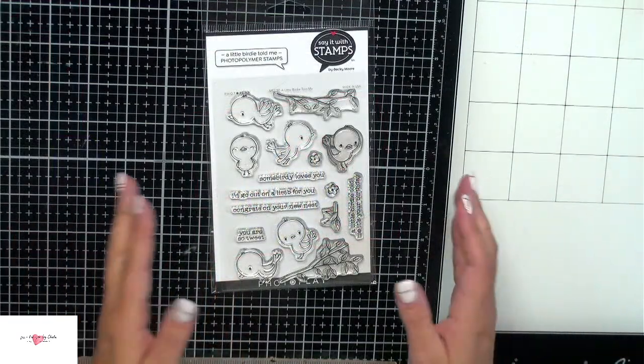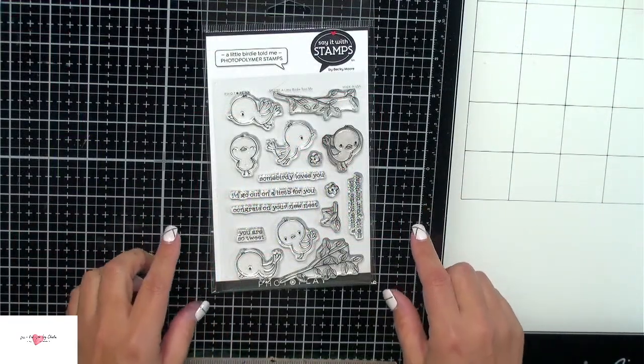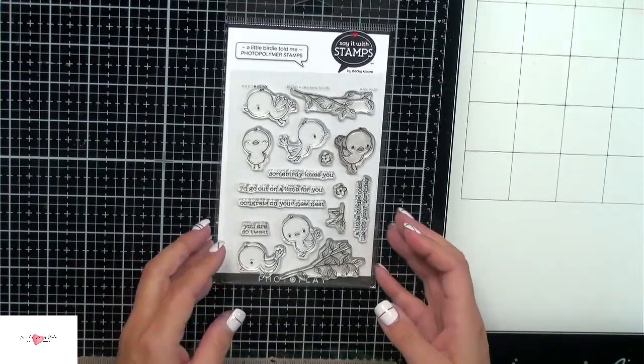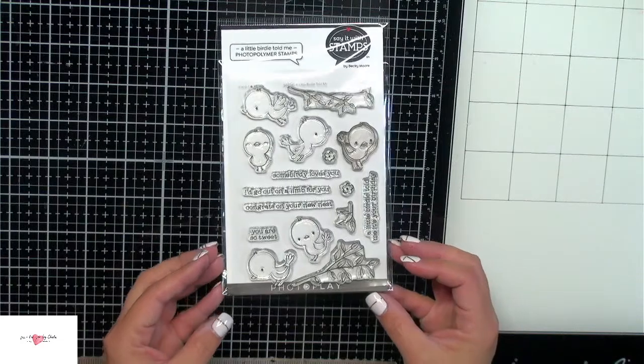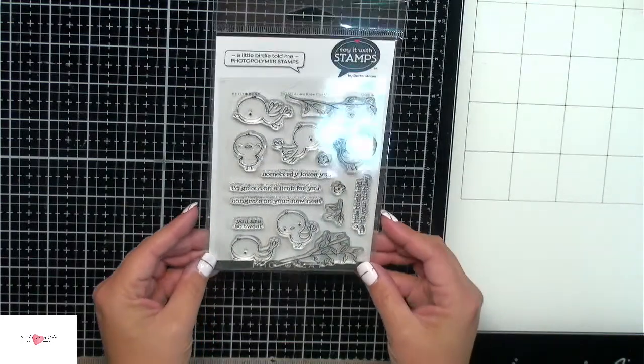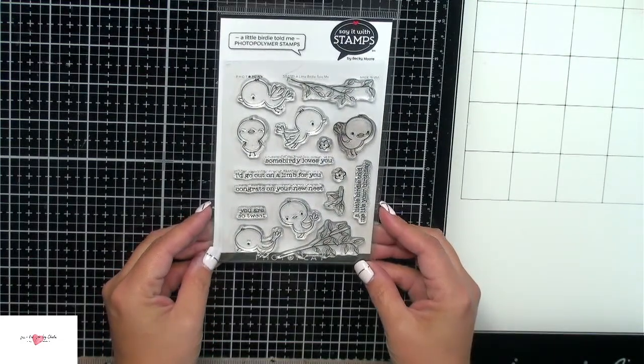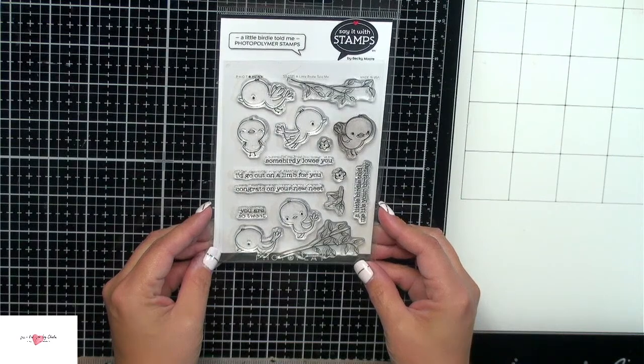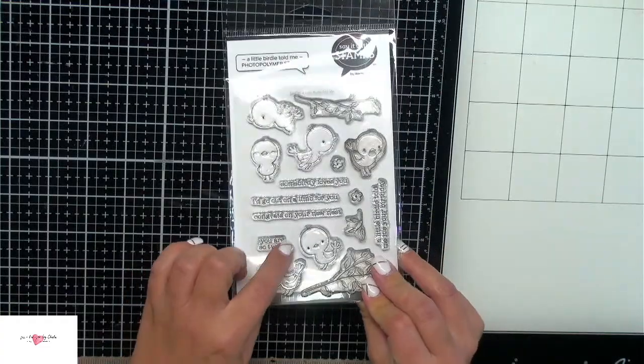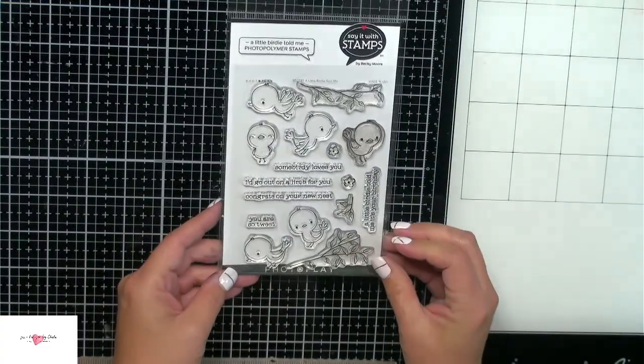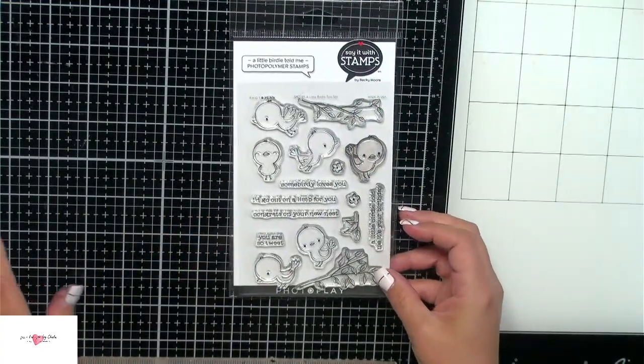Okay, so I am back here with the second card. My stamp set did arrive the next day. So I'm very happy about that. So I'm going to go ahead and create my second card for our blog hop For the Birds. And I am using this, a little birdie told me stamp set from Photo Play. And these are really good quality stamps. I really liked them.